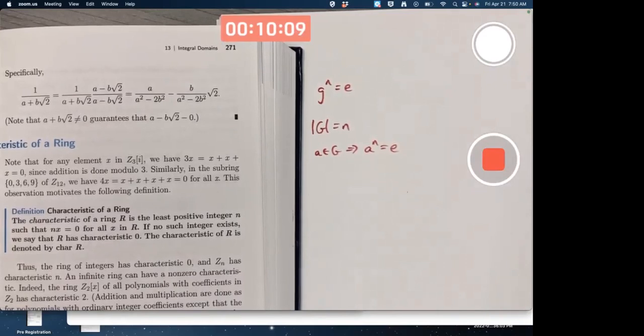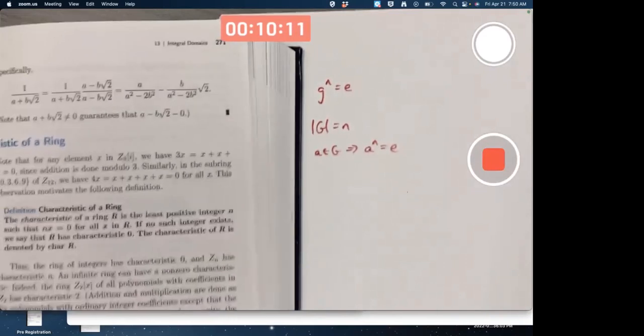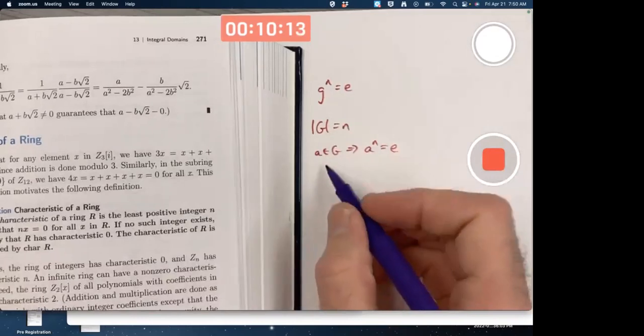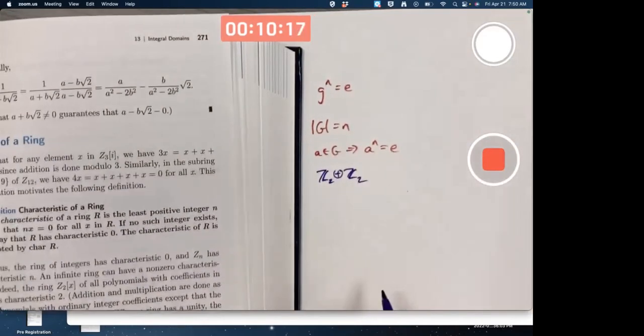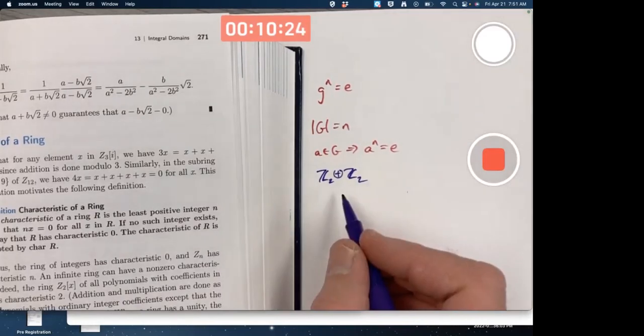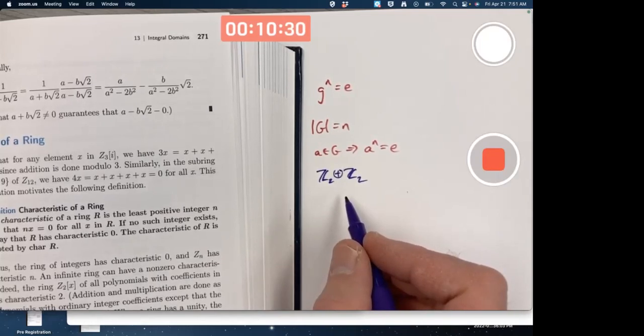For example, in the external direct product of Z2 with itself, the identity has order 1 and all the other elements have order 2, the other 3 elements. The characteristic of this would have been 2, not 4. The number of elements is 4.